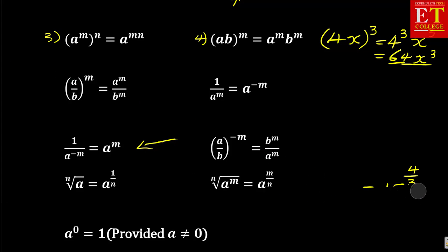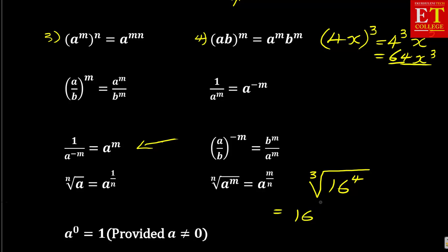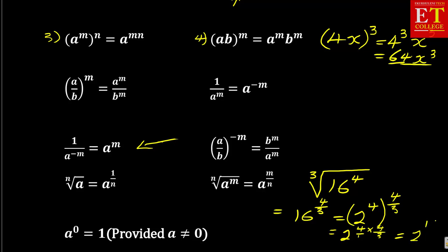Sometimes problems are given in an intelligent way. For example, simplify the cube root of 16 to the power 4 without using a calculator. The first thing to do is write this as 16 to the power 4 over 3. Then, since 16 is the same as 2 to the power 4, you have 2 to the power 4 over 1 times 4 over 3, which is the same as 2 to the power 16 over 3. These are ways of simplifying such problems using the laws of exponents.